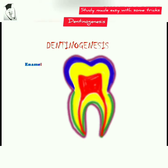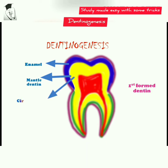Dentinogenesis is the formation of dentine, where mantle dentine is first formed and circumpulpal dentine is formed after the mantle dentine.